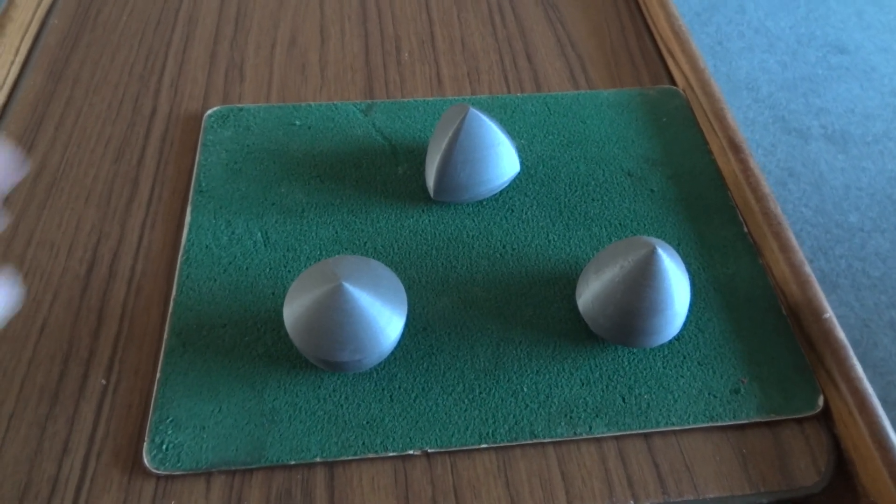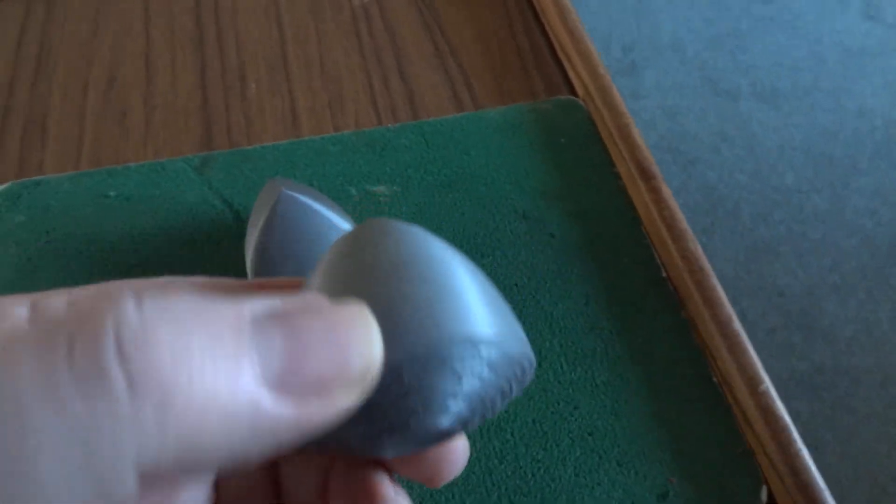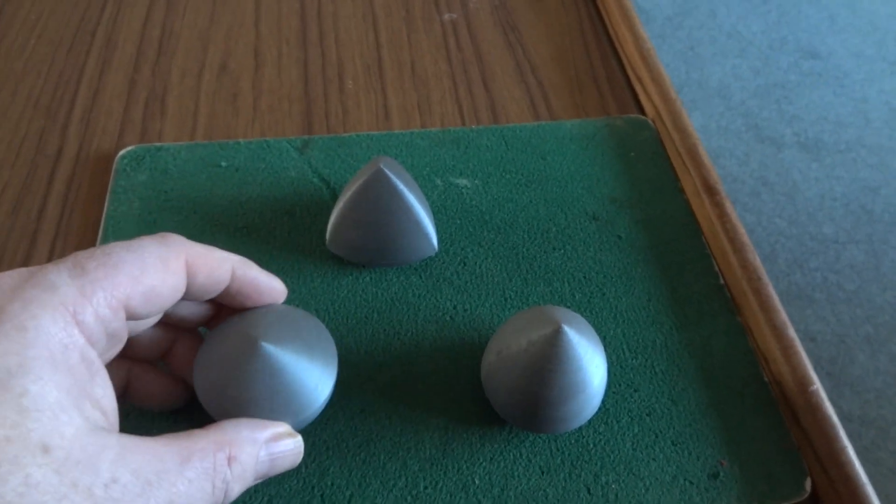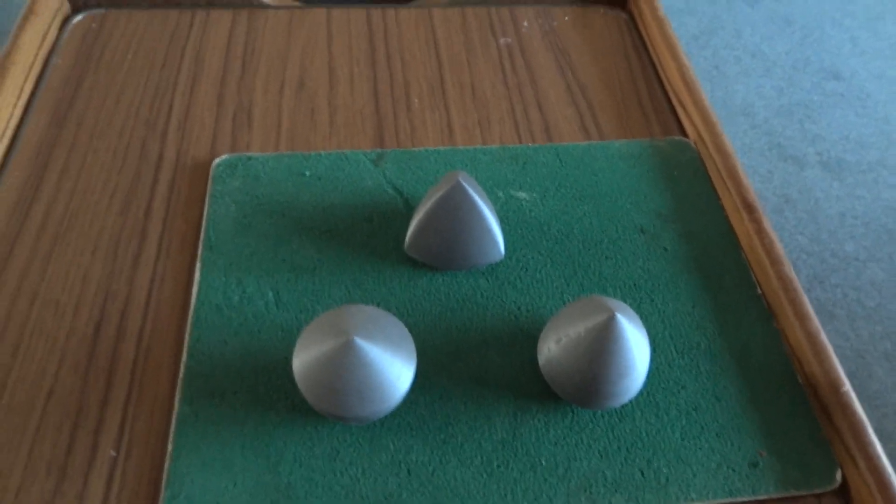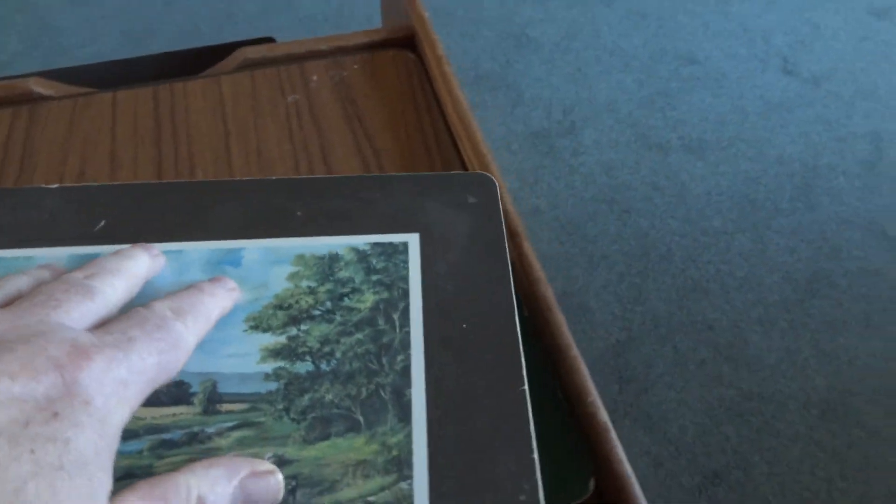These are solids of constant width, and although they're very lumpy looking shapes, they're all actually 50 millimeter width or diameter. You can use them as ball bearings.